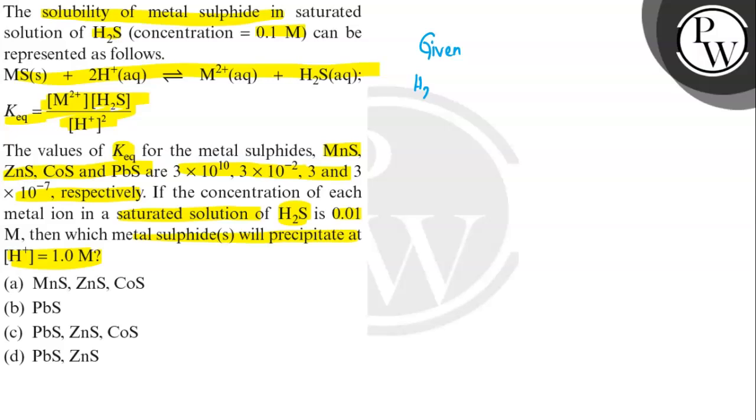H2S concentration is given as 0.1 molar and M+2 ion concentration is 0.01 molar. MnS K equilibrium value is 3 × 10^10.